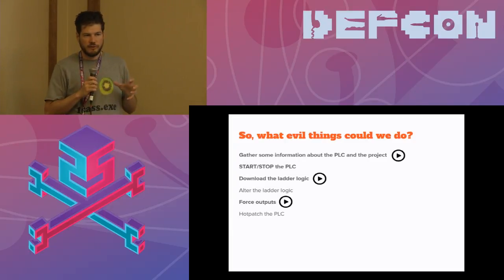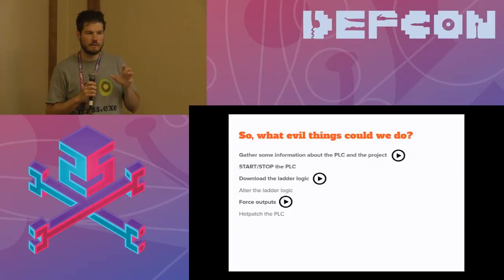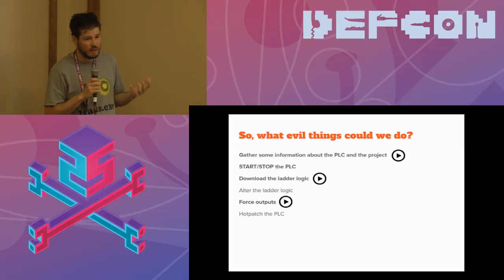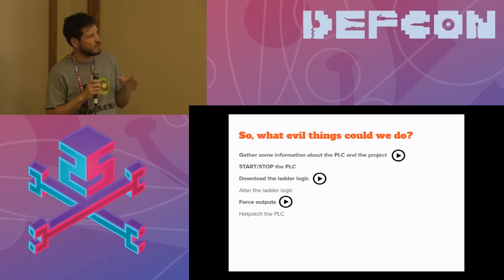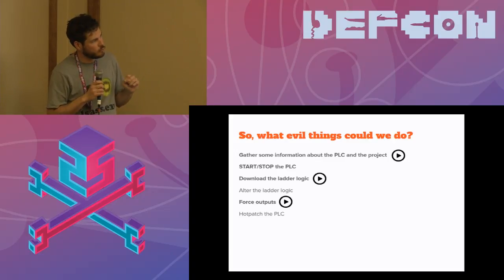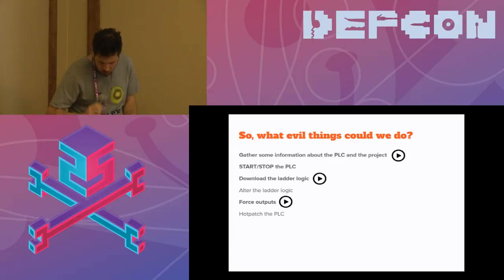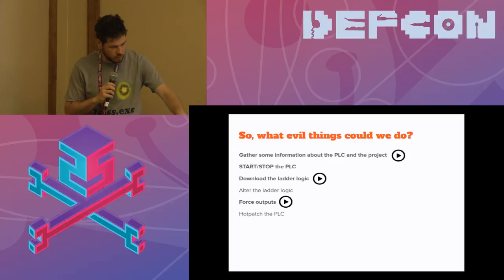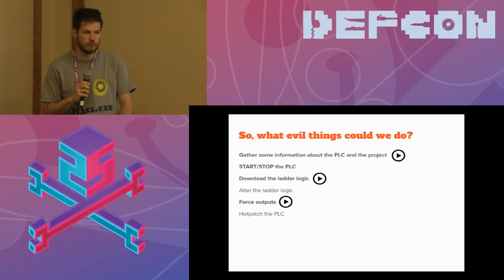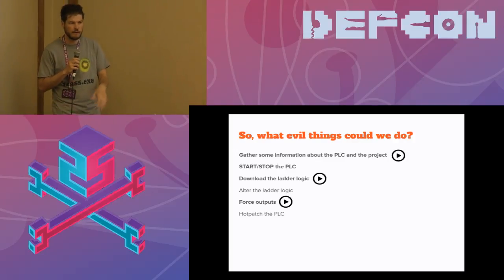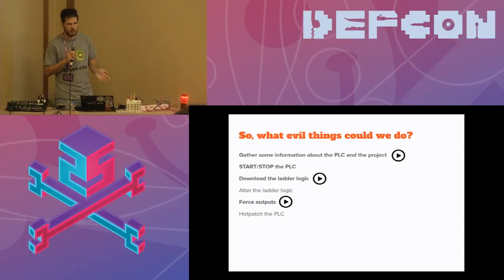Using Modbus function code 90, we can do everything that can be done with Unity Pro, the programming software. So what kind of evil things can we do? First — not really offensive — is to gather some information about the PLC and the project, and I'm going to demo that. On my setup I have a Schneider M340 PLC, and my laptop hosts both the attacking VM and the legitimate HMI workstation.